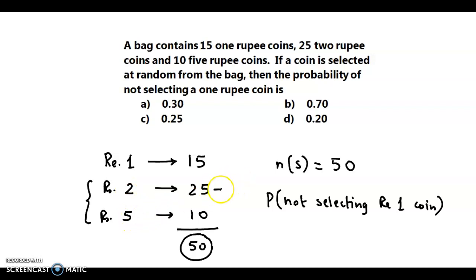Now two rupee coins are 25, five rupee coins are 10. So we have to make a selection from these 35 coins. So the required probability would be 35 by 50, or if we perform this division, 35 by 50 is 0.7 or 0.70. So the correct answer to this question is option B. Thank you.